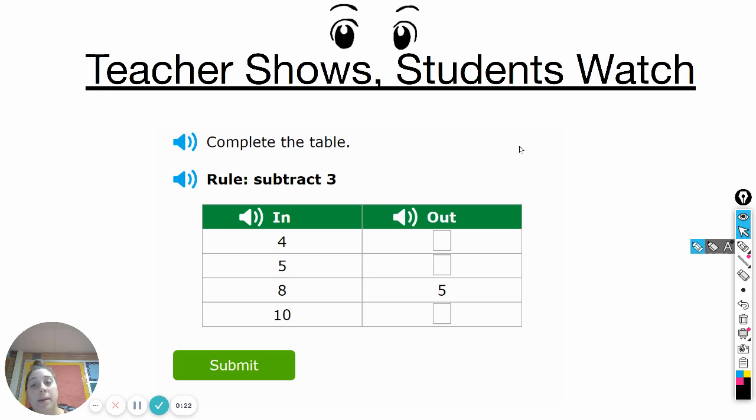I'm going to start by showing you an example. This is the problem as you would see it on IXL and it says to complete the table. The rule is subtracting three. So you can kind of think about this as a machine and over here is what you put in the machine and over here is what you get out.